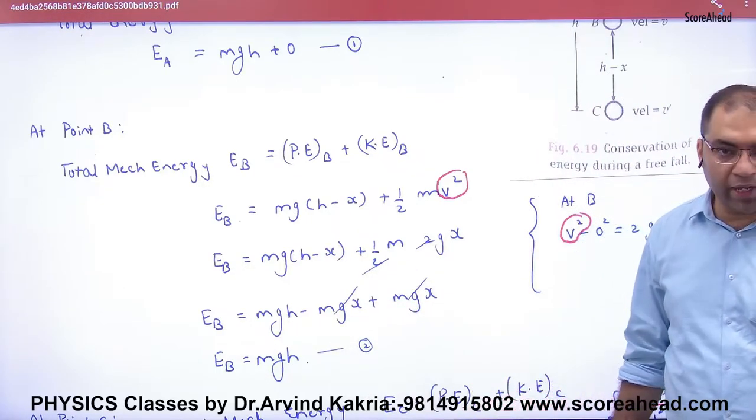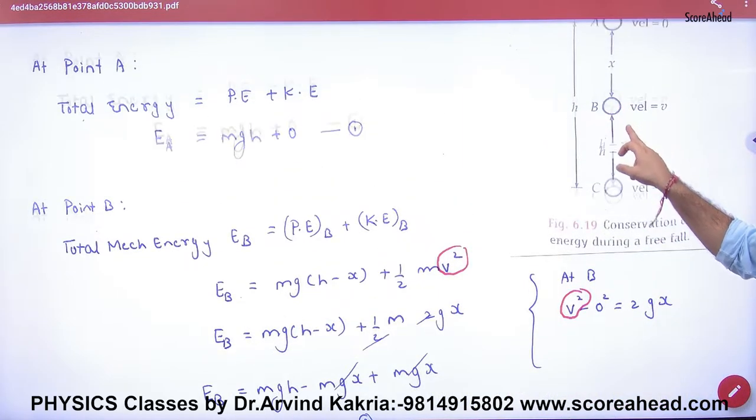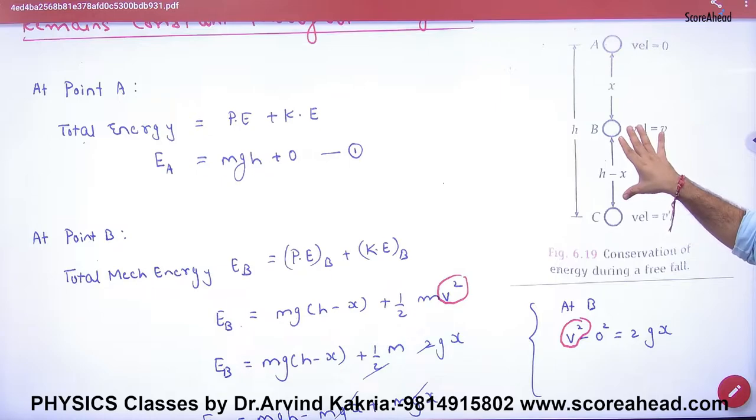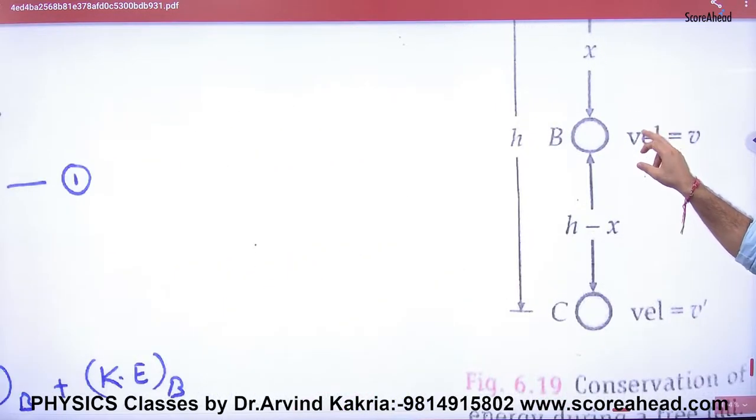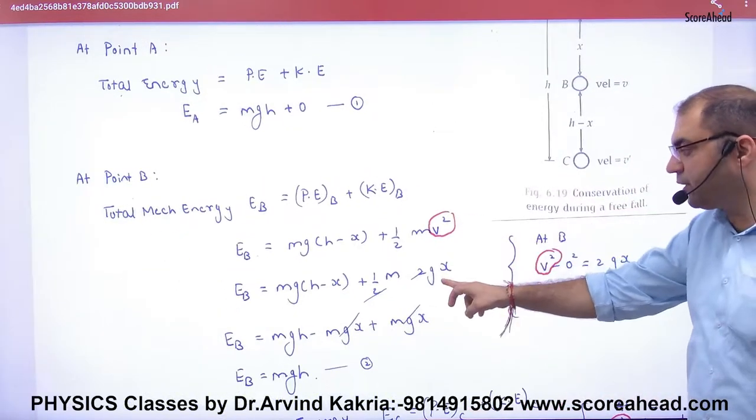So that means at point B, sum of potential and kinetic: potential is mg(h-x), in kinetic velocity is V. Put the V value here, answer is mgh.